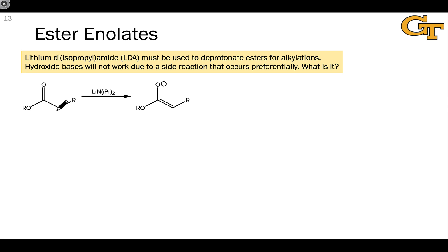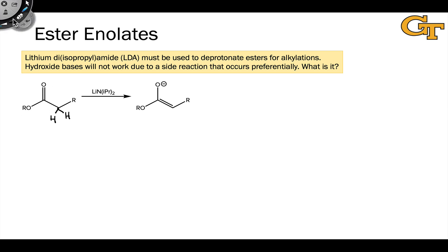One of the nice things about an ester is that it only has one alpha carbon, since the other side of the carbonyl group is occupied by an alkoxy group. However, esters bring their own set of problems and issues because the OR group has the potential to act as a leaving group.